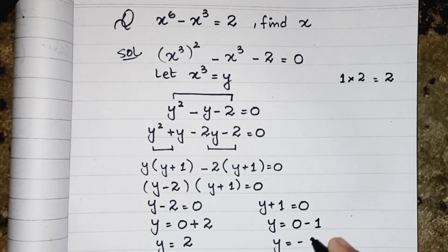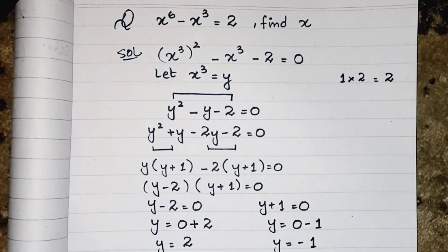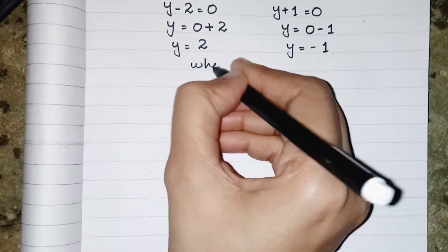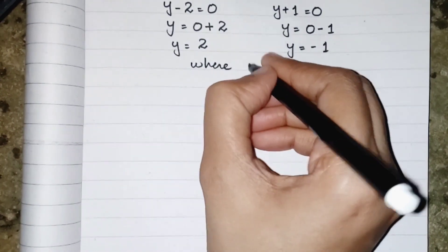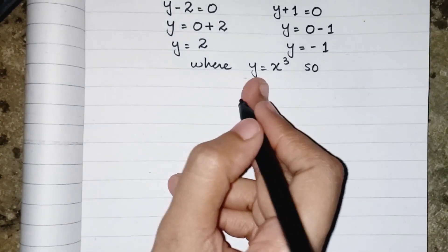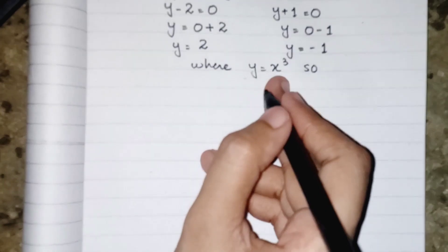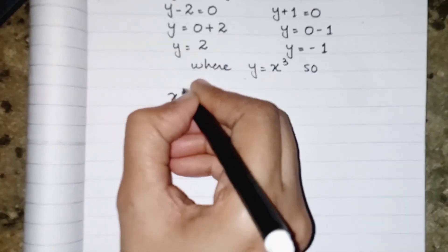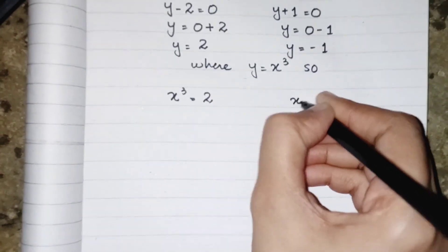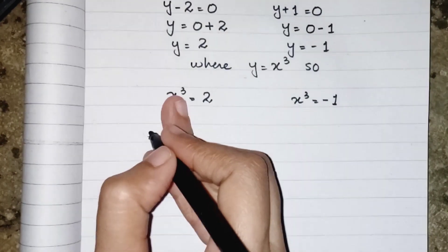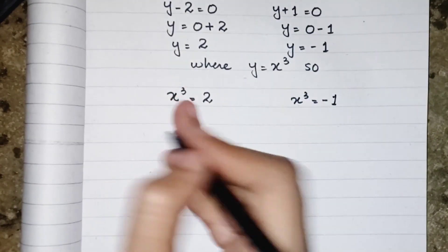where y equals to x power cube. So because y is an imaginary variable, the original variable is x. So we can say that x cube equals to 2 and over here x cube equals to minus 1. So for finding the value of x, we have to remove this cube.